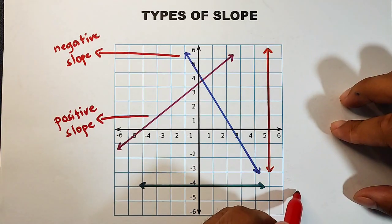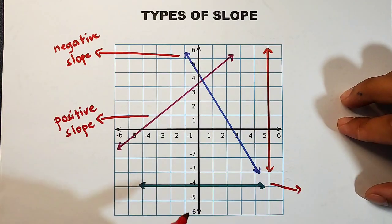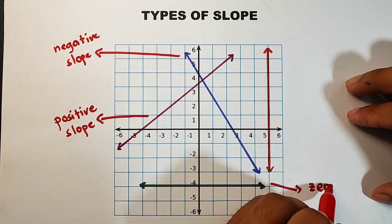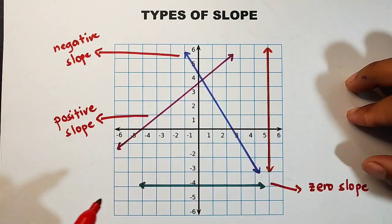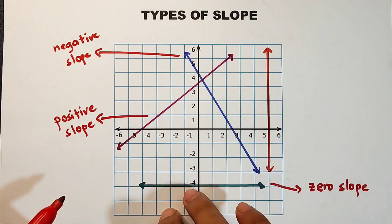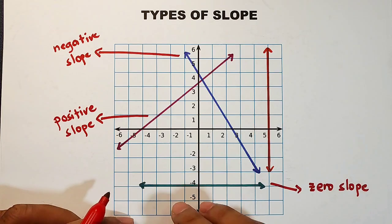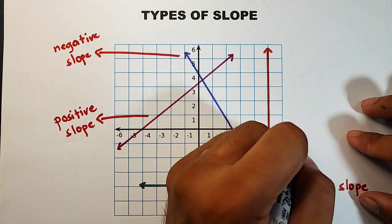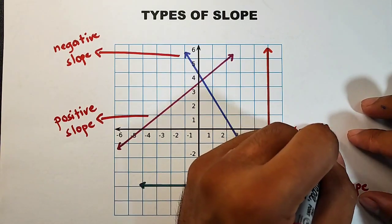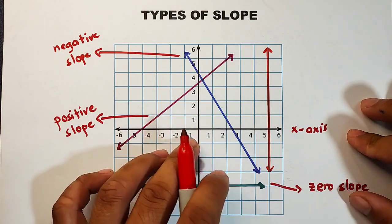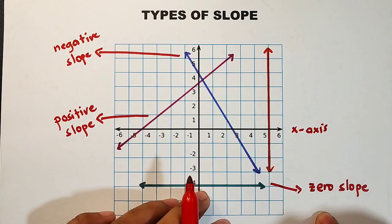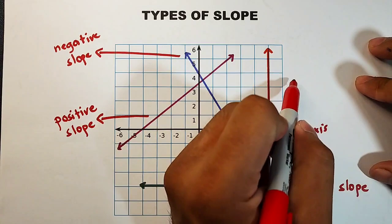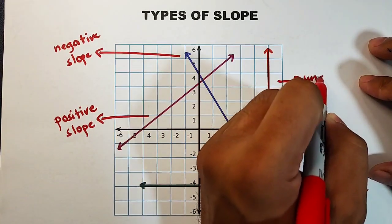Now for the green line — when you calculate the slope of this kind of line, what you will get is a zero slope. Simple description: you get a zero slope if your line is parallel to the x-axis. If your line is parallel to your x-axis, automatically the value of slope you calculate is zero.